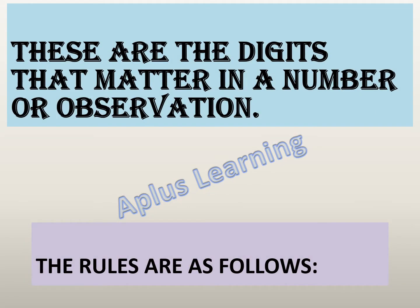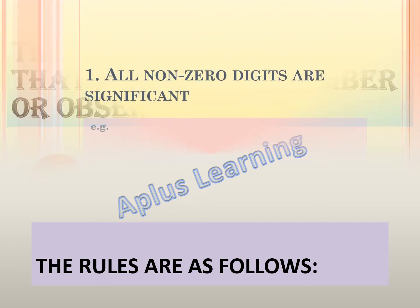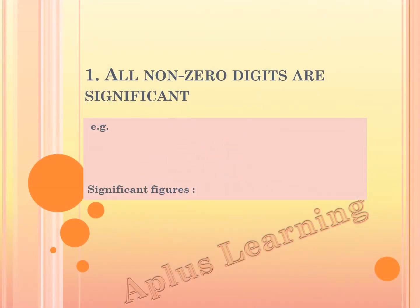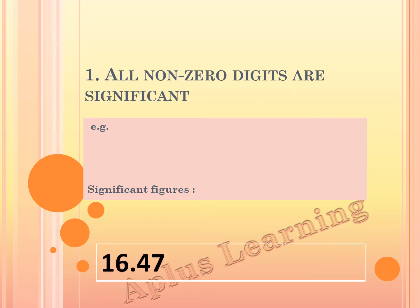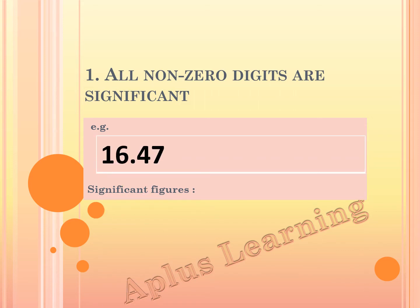Dear children, do you know that these significant figures are the digits that matter in a number or observation? We have certain rules for these. In the first rule, all non-zero digits are significant. Let's take an example: 16.47. Here, all these digits are non-zero, so the significant figure comes out to be 4.